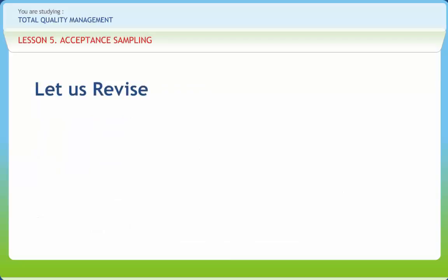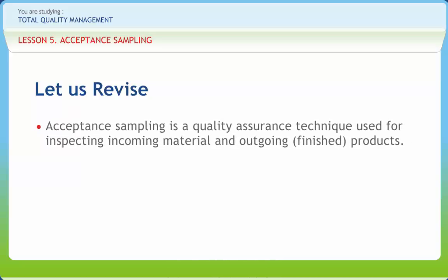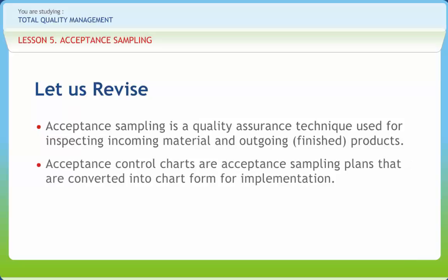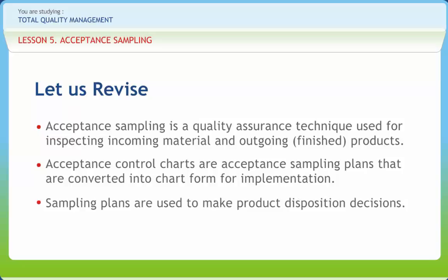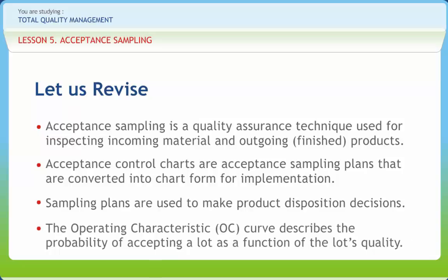Before we end, let us briefly revise what we have studied so far. Acceptance Sampling is a quality assurance technique used for inspecting incoming material and outgoing or finished products. Acceptance Control Charts are acceptance sampling plans that are converted into chart form for implementation. A double sampling procedure means that if the sample taken from the batch is not informative enough, another sample is taken. Sampling plans are used to make product disposition decisions. The Operating Characteristic OC Curve describes the probability of accepting a lot as a function of the lot's quality. The decision based on counting the number of defectives in a sample can be to accept the lot, reject the lot, or for multiple or sequential sampling schemes, to take another sample and then repeat the decision process.